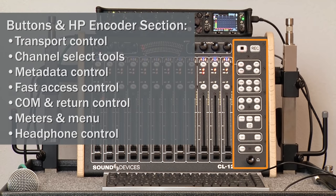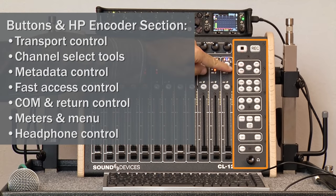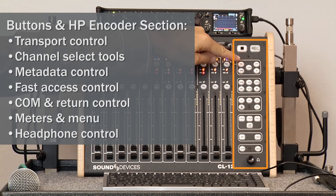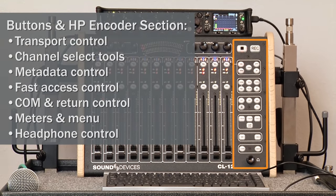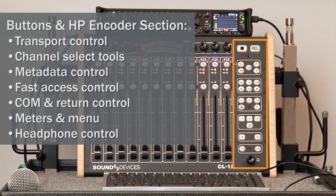Below that we have what we call the channel select tools, which allow us to toggle the channel on or off, whether it's armed, we can name a channel, toggle high pass filter, and phase reverse.